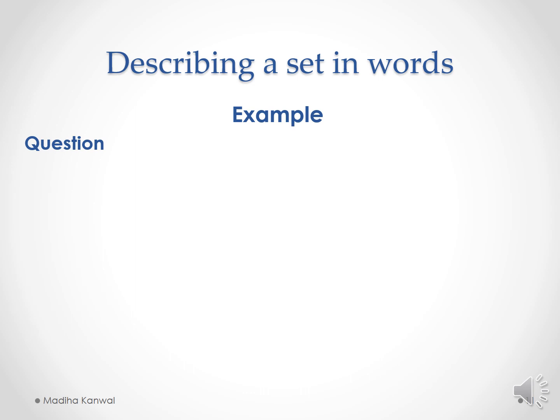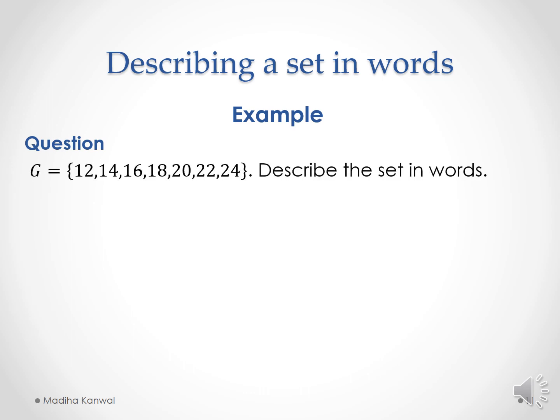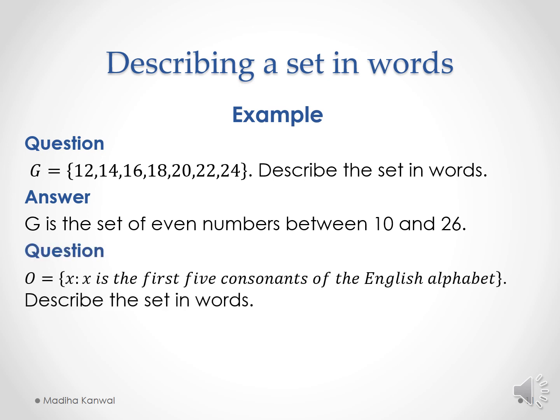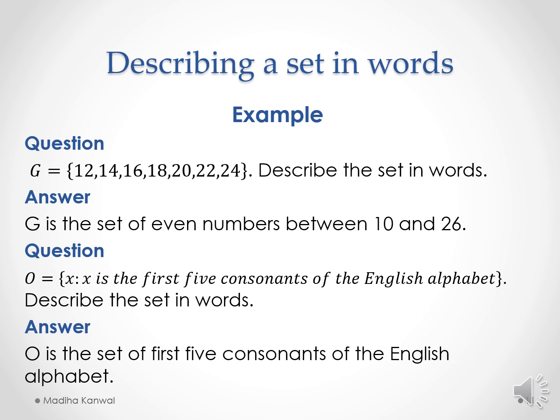For example, if a set G has elements 12, 14, 16, 18, 20, 22, and 24, and you are asked to describe the set in words, the answer is: G is the set of even numbers between 10 and 26. In another question, if O = {x | x is the first five consonants of the English alphabet} and you are asked to describe in words, the answer is: O is the set of the first five consonants of the English alphabet. You can solve Exercise 14A question number 11, parts A and B from your assignment using this.